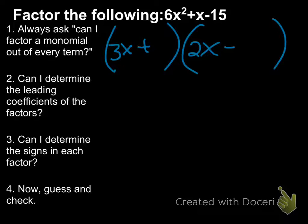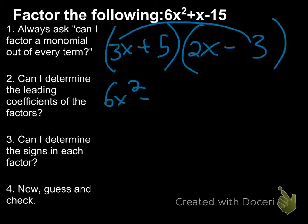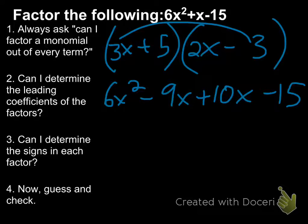Factors of 15. 5 and then the 3. Alright, now we've kind of guessed and filled in all the blanks. Let's check. This will give me 6x squared. Minus 9x. Plus 10x. Minus 15. Does that combine to give me a 1x? Yeah, I think it does. So I think we won. That was pretty good. First time. First try.